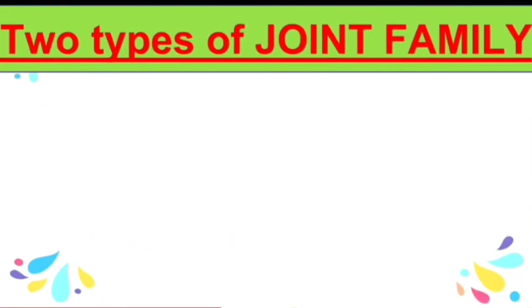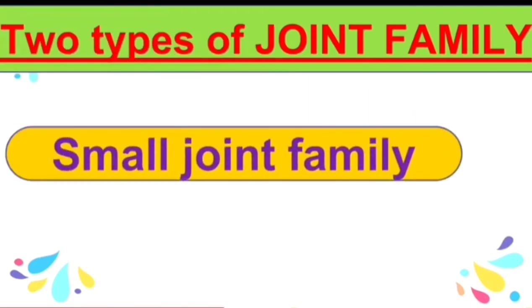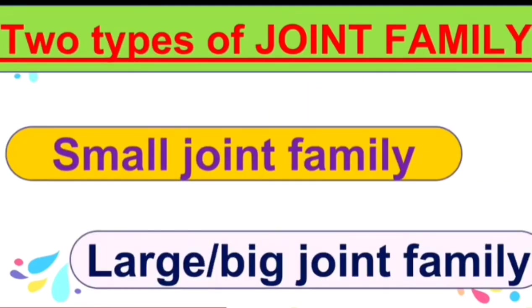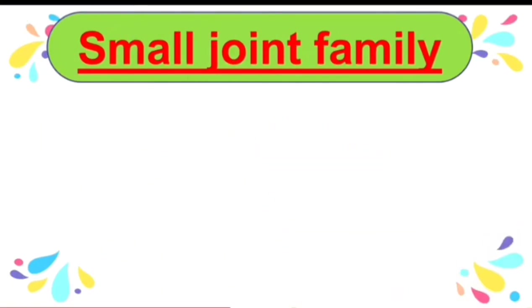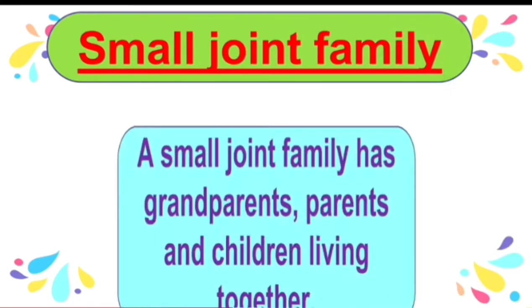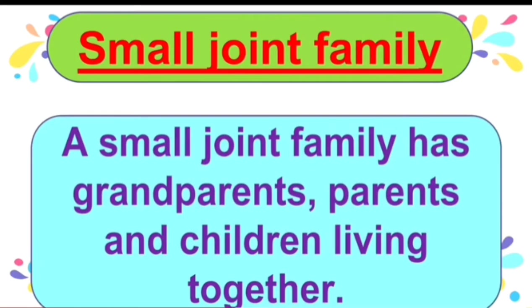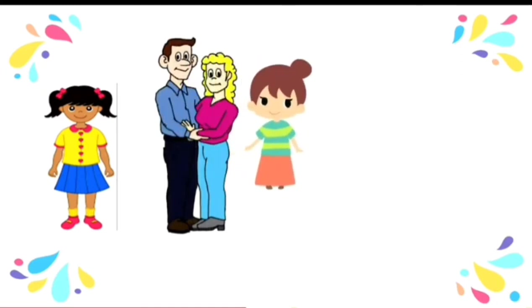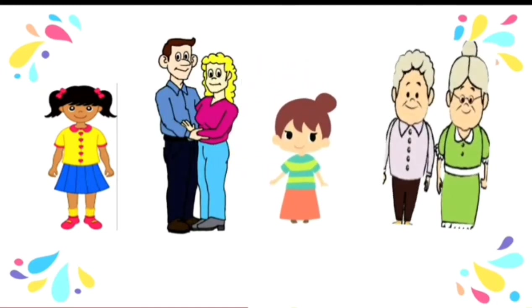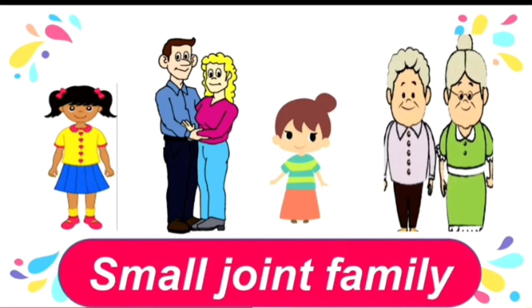There are two types of joint families: small joint family and large or big joint family. A small joint family has grandparents, parents and children living together. Look at this girl — she has parents, a younger sister and grandparents, so she is having a small joint family.